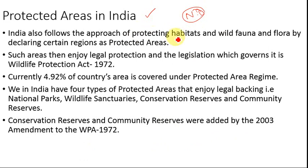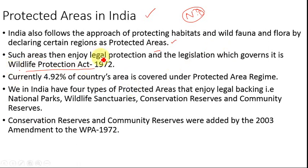India follows the approach of protecting habitats and wild flora and fauna by declaring certain regions as protected areas. We declare these protected areas under our legislation. This legislation — important from your prelims point of view — is the Wildlife Protection Act. Currently India has 4.92% of its area under the protected area regime.